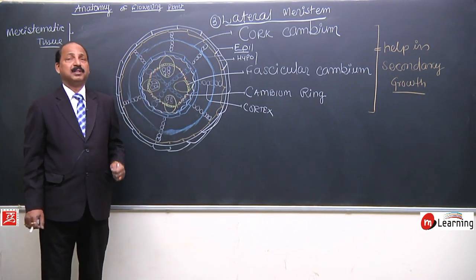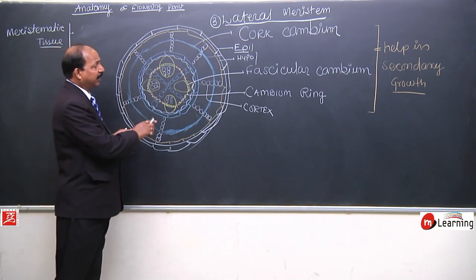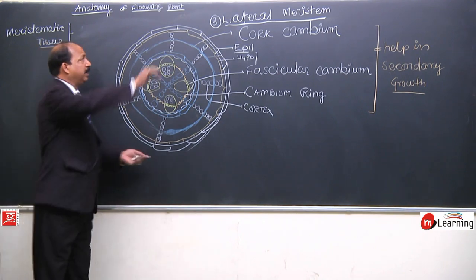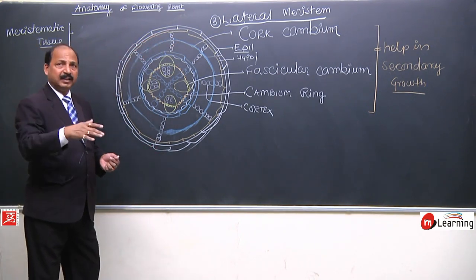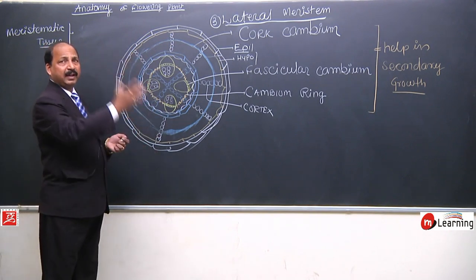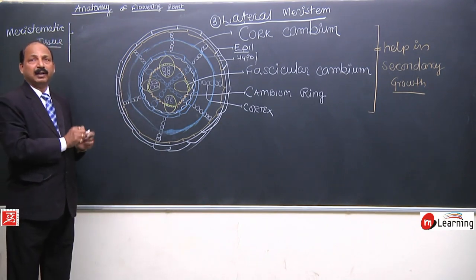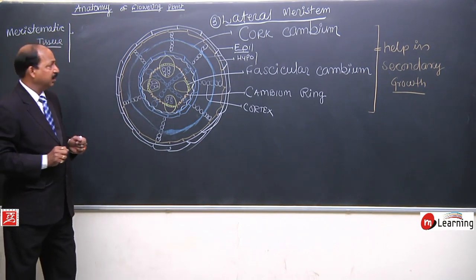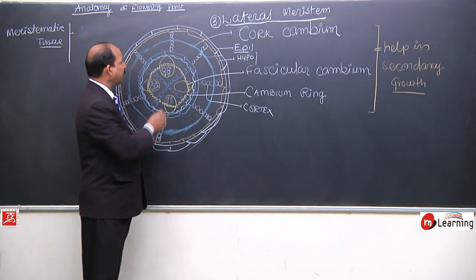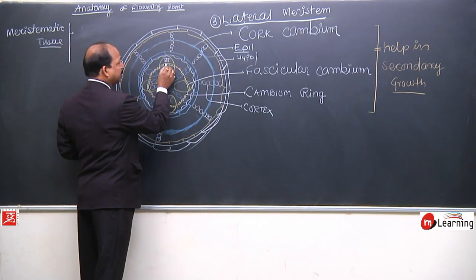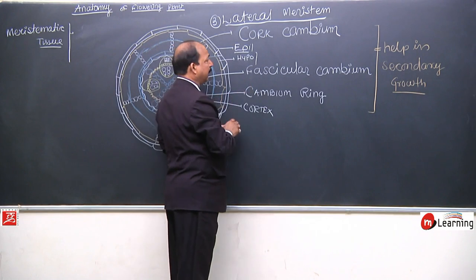To understand lateral meristem, imagine this dicot stem is lying down, then we cut a piece of it and paste it on the board to show you. When we looked at the cross-section, what was the first cambium found? Between xylem and phloem, we found vascular cambium — it was named fascicular cambium.